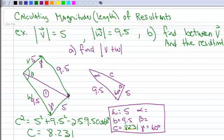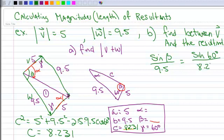Well, here's vector V right here, and the resultant. So I want to find this angle right here, which is the same as this angle down here. So I want to find, in this picture, I want to find angle beta. So now I'm going to use the law of sines. So I can say that the sine of beta is to 9.5, as the sine of 60 degrees is to 8.231.